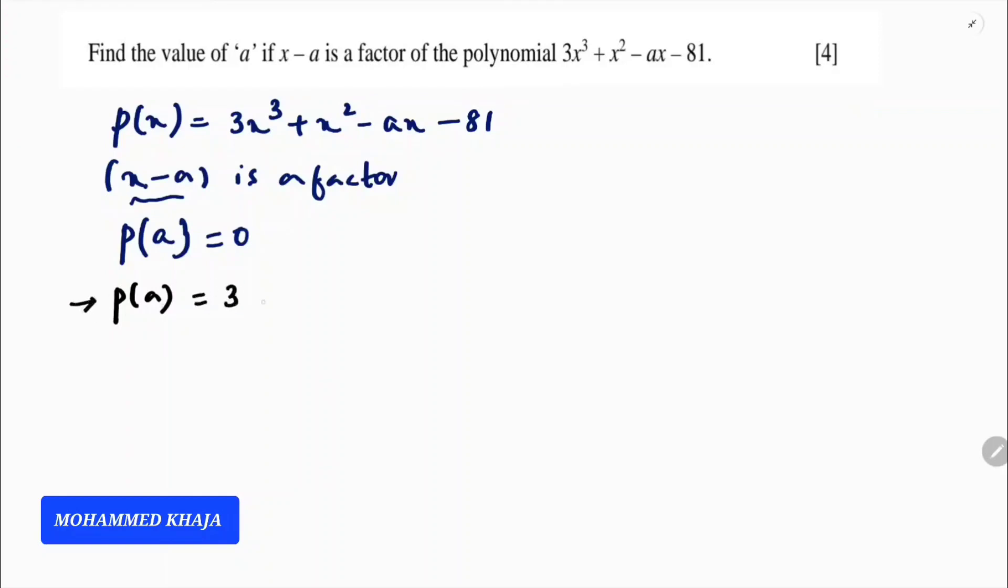Here, 3 times, in place of x I will write a cube, plus in place of x here a square. It will become a square minus a times a minus 81 equals 0. So 3 times a cube plus a square minus a square minus 81 equals 0.